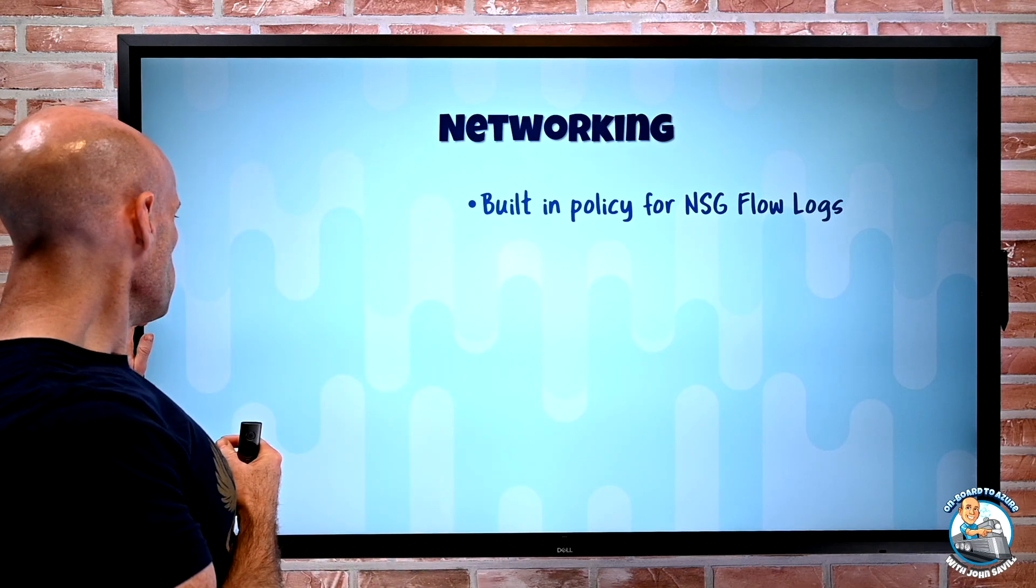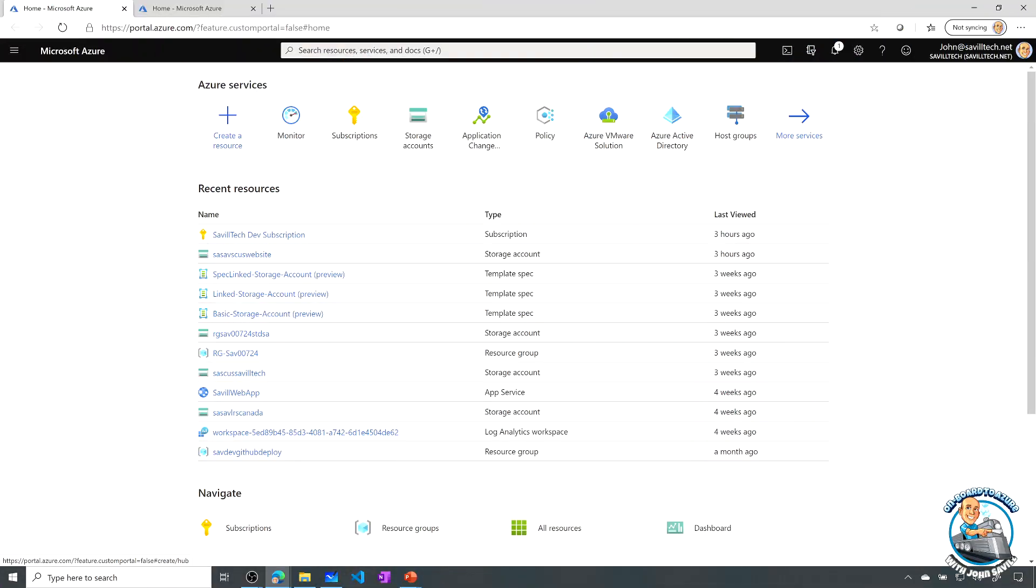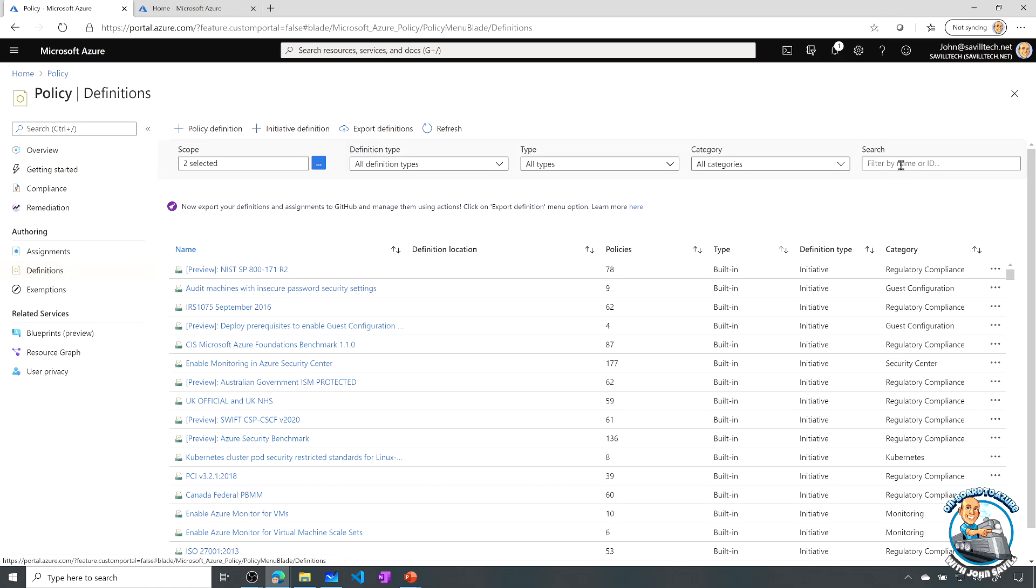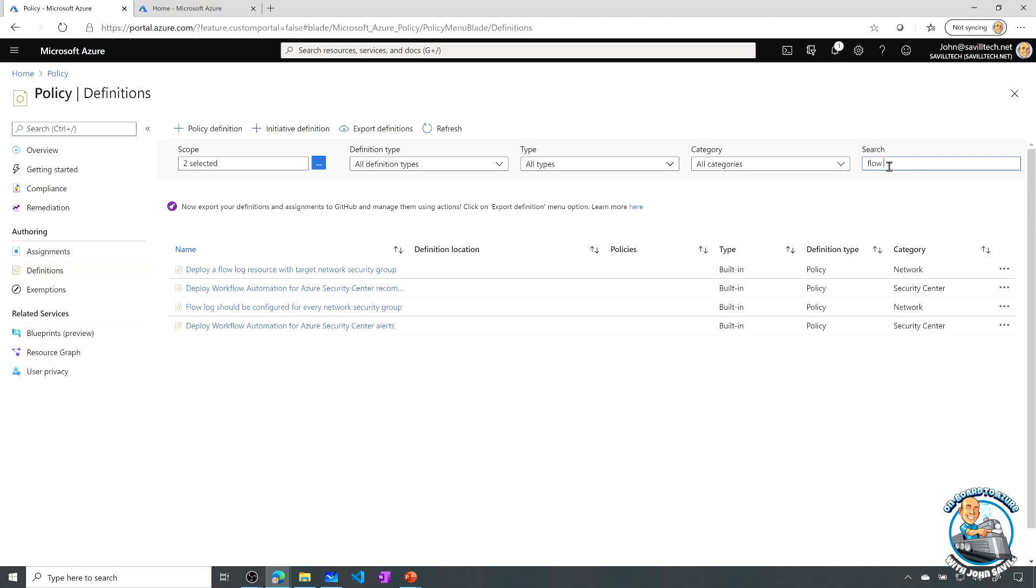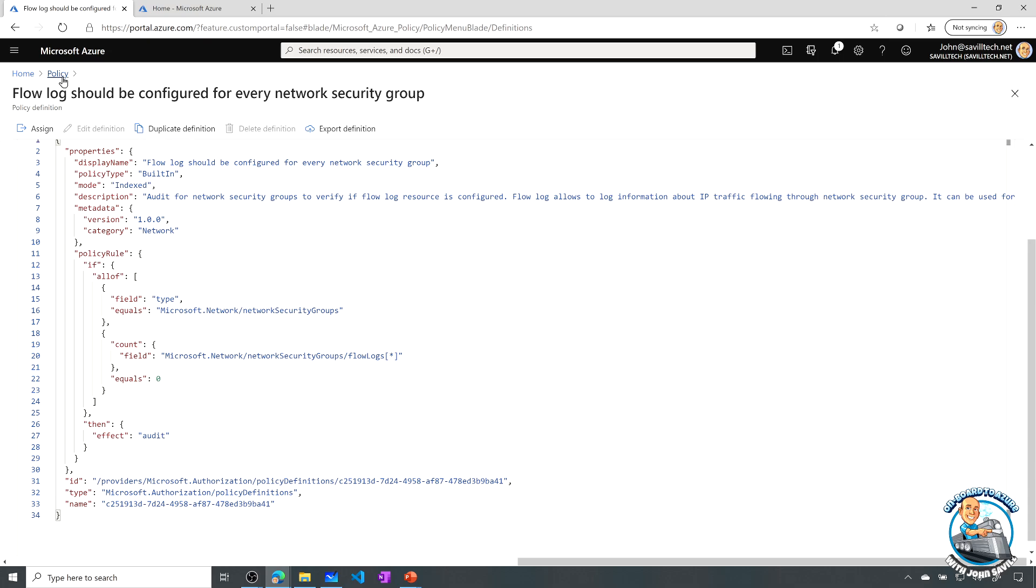So if we actually jumped over, and let's take a look. If from within here, I just go and look at Azure Policy, and we look at the definitions, if I now go and filter based on flow log, we can see there's now two. So one is this flow log should be configured. So that's just going to go and audit if I have, here we can see if the type equals network security group, and the count of flow logs will be zero, then it's going to go and audit that fact.